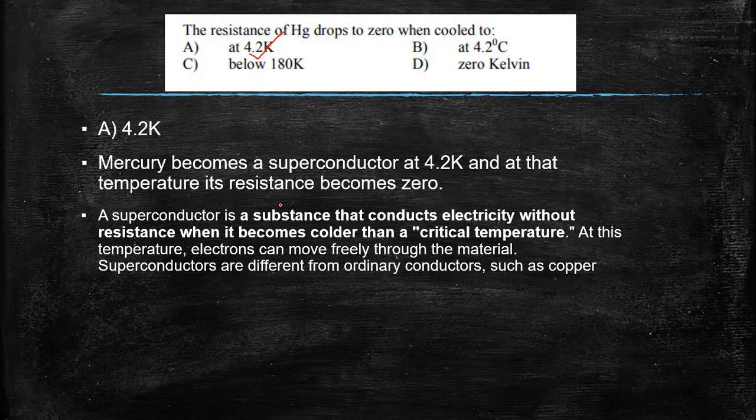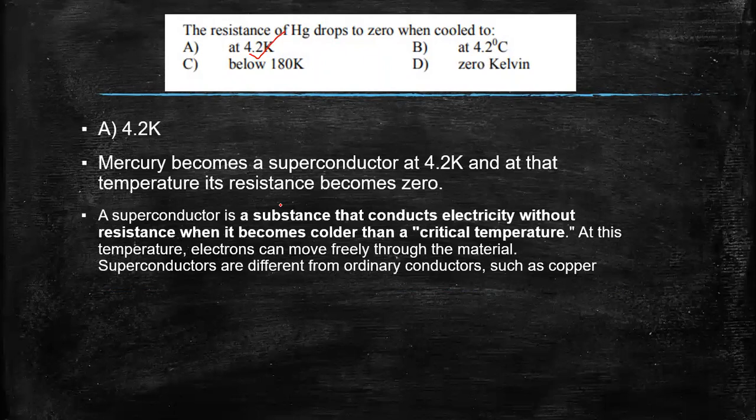Now this question can be asked in three different ways. One as shown in the question. Second, we can be asked what is the critical temperature of Hg, and also at what temperature does mercury become a superconductor. So all the three answers is the same. This is 4.2 Kelvin.